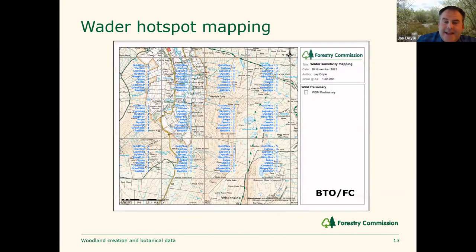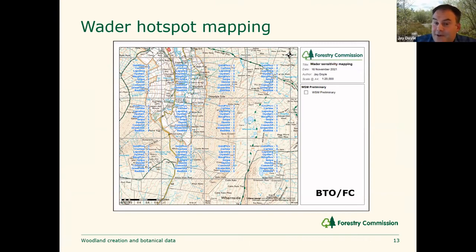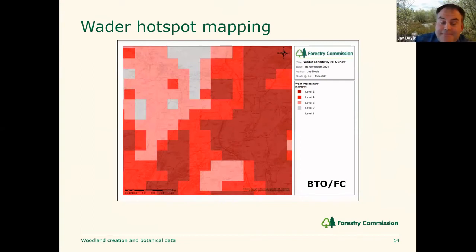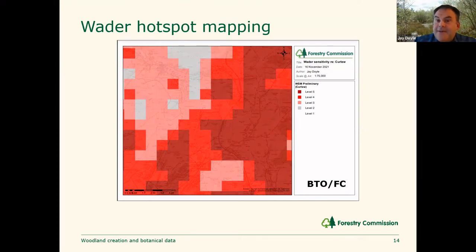More recently, we've worked on hotspot mapping in association with the BTO — a modelling project that has been ground-truthed over the course of the summer. This allows us to look at assemblages of breeding birds and the sensitivity in the landscape. Individual species in an upland context are scored on a basis of one to five, five being highest in terms of sensitivity. When you zoom back out, you arrive at a heat map — here is an example of a curlew heat map, with dark red at level five being the highest order of concern. This can help inform survey efforts and steer woodland creation away from areas vital for curlew conservation.